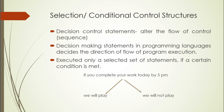The second one is selection or conditional control structures. For example, if you complete your work today by 5 pm — that is a condition. Then we will play. If the condition is true, we can play; otherwise, if the condition is false, we will not play. So according to this decision, there are two cases, and we can select from them based on the condition.